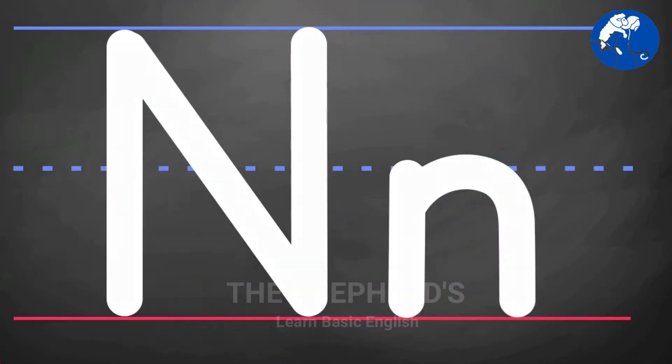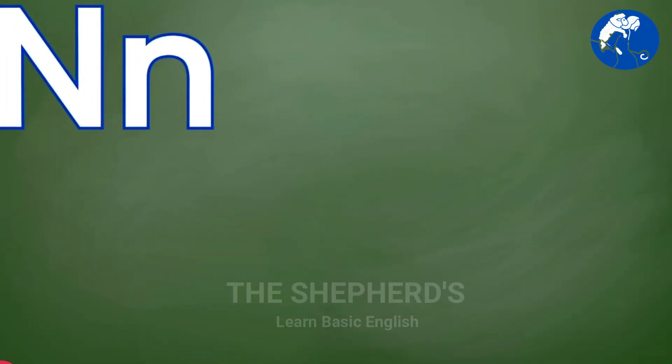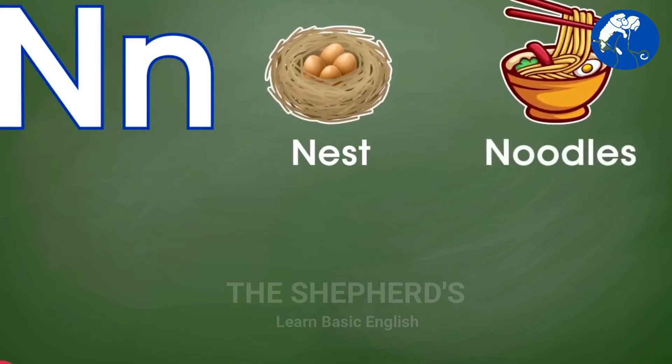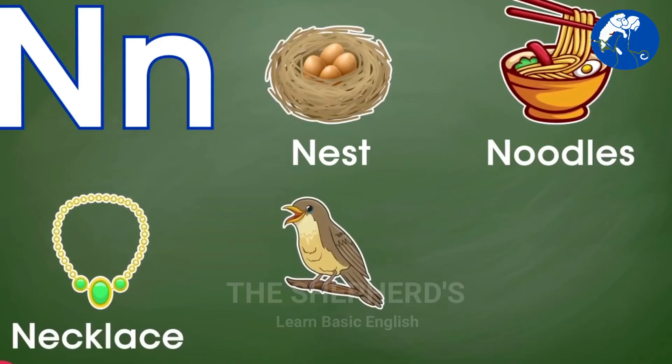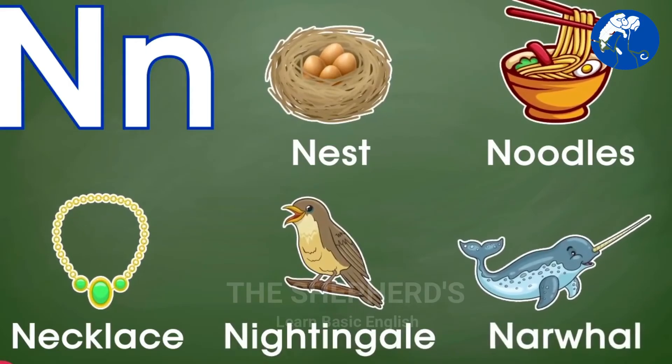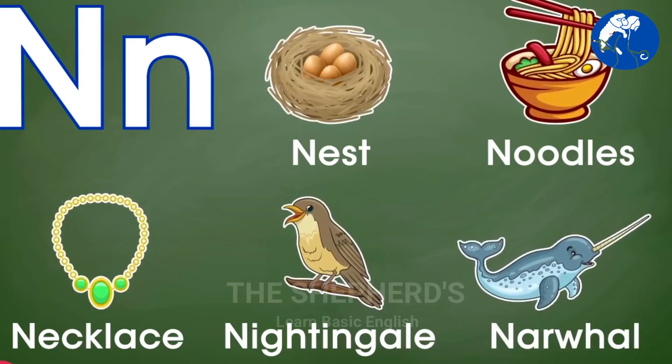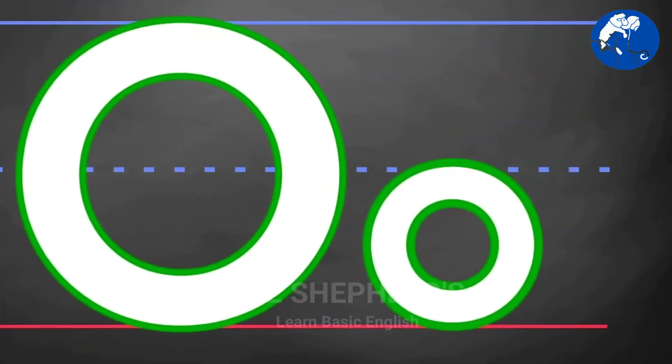Phenomenal! N is for Nest, Noodles, Necklace, Nightingale, Narwhal. The next letter is Letter O.